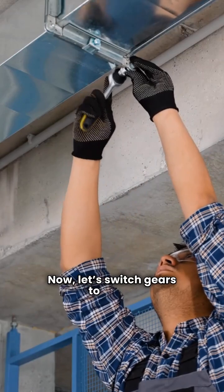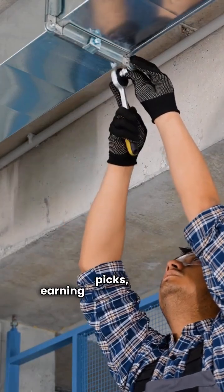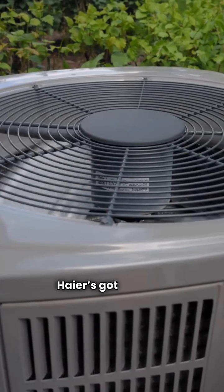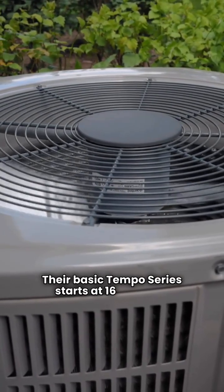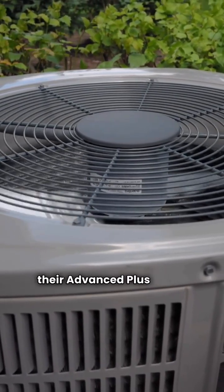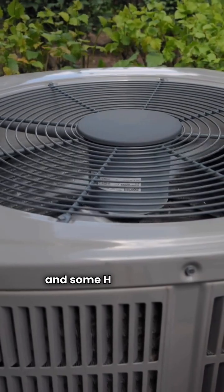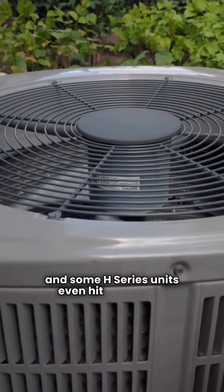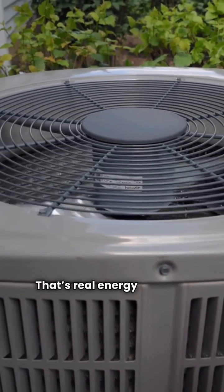Now, let's switch gears to Haier. This brand is one of my top picks, earning a solid four stars. They really give you more value and better tech. Haier's got options. Their basic Tempo series starts at 16 SEER, but their Advanced Plus series goes up to 21.5 SEER, and some H-series units even hit 22.5 SEER or two. That's real energy savings.